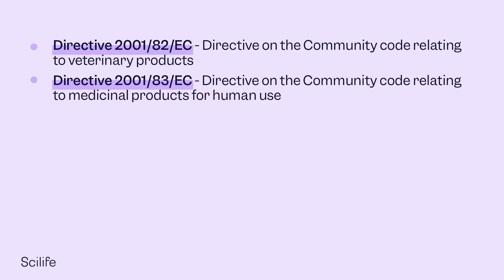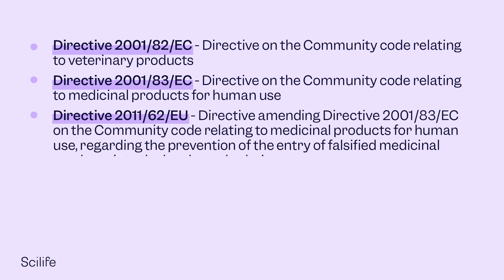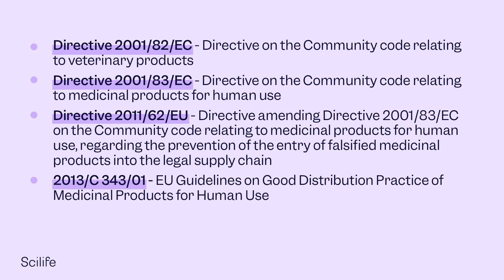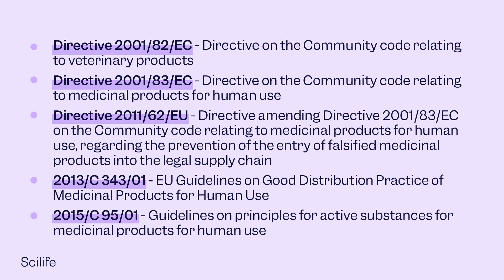There are a number of GDP directives, guidelines and reports. There are two directives for the distribution of medicine in the EU: one for medicinal products for veterinary use and the other for medicinal products for human use. There are also two guidelines: one GDP guideline for medicinal products and the other for active substances.